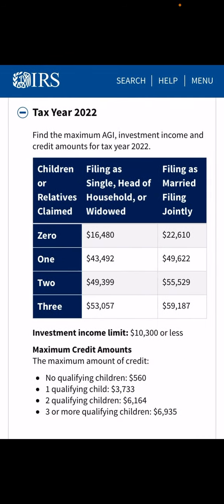Here is the adjusted gross income breakdown per child. If you have no children, the income limit is $16,480. If you have no children and you're filing married filing jointly, that income limit is $22,610. For one child, the limit is $43,492; married filing jointly it is $49,622. For two children, the income limit is $49,399, and for married filing jointly it is $55,529.